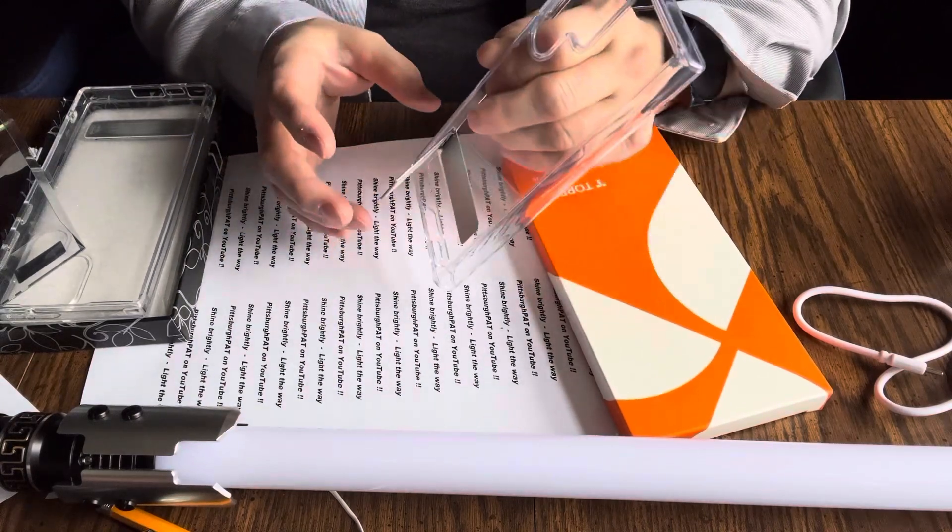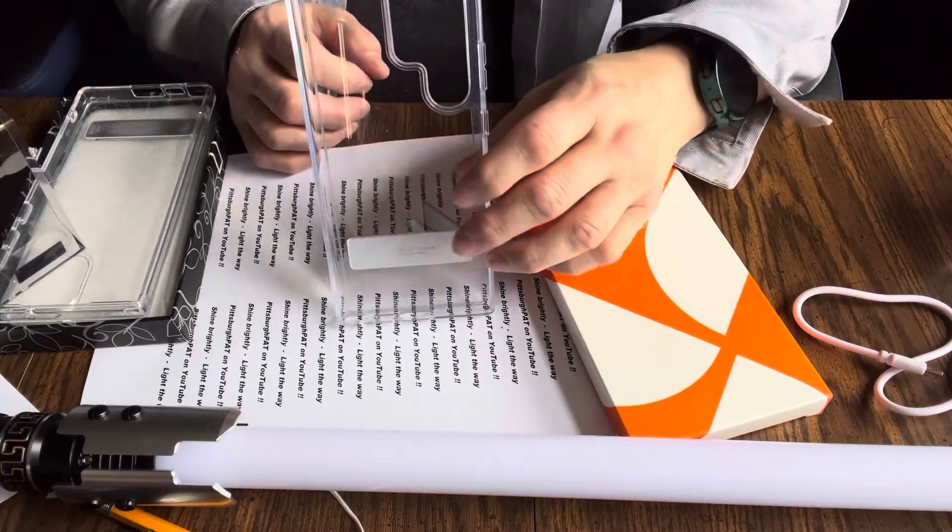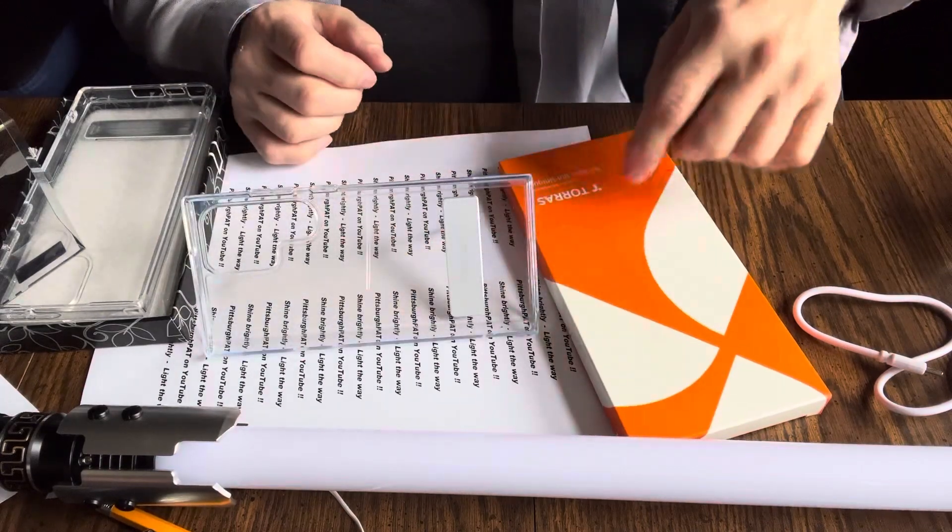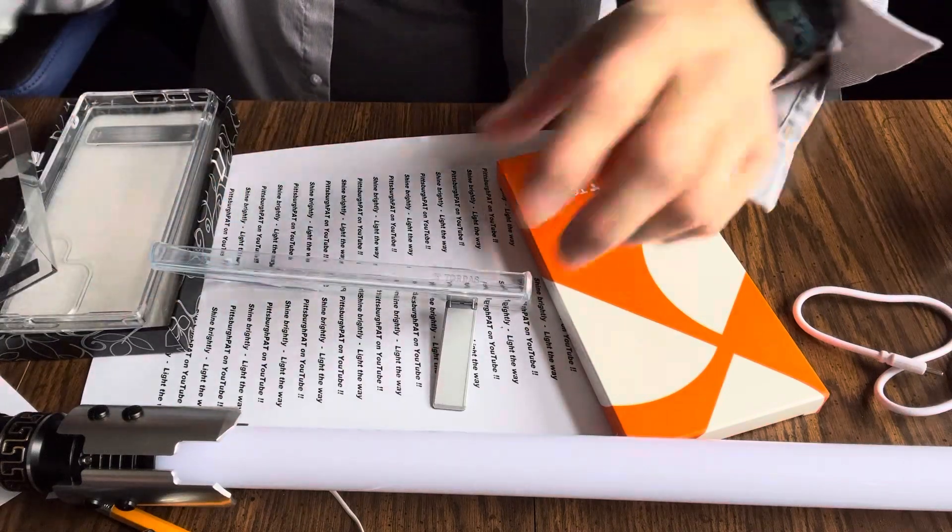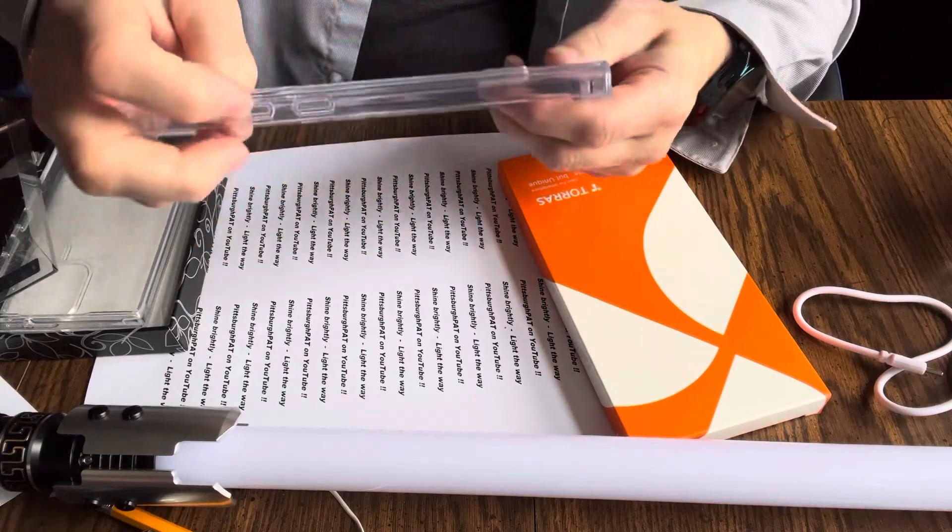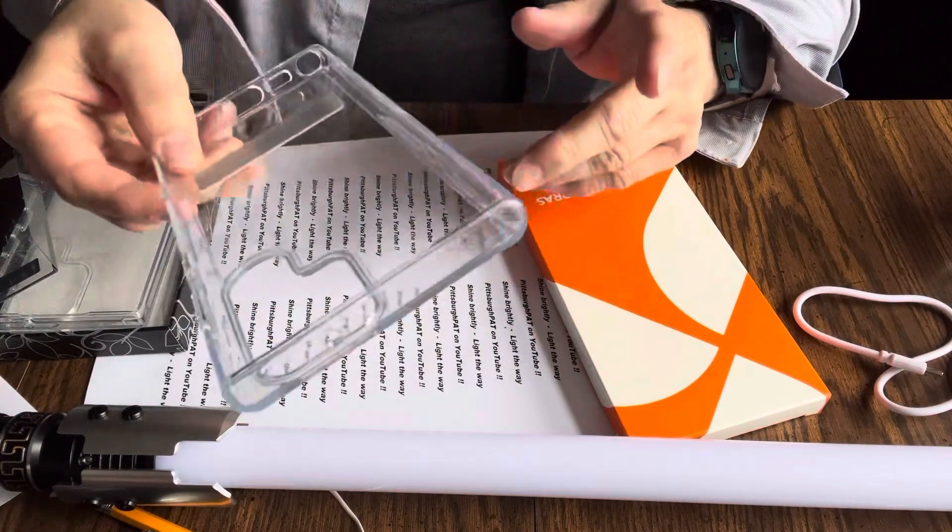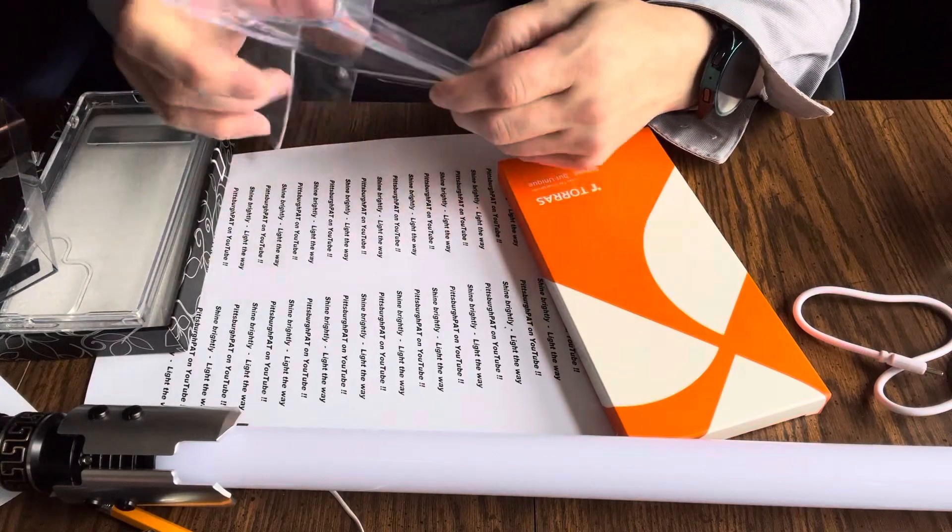But the nice thing about this is it came with a kickstand. And the cool thing about this kickstand is it works like that, works like this. This is the Taurus. It also works like that. So that's kind of slick. The buttons are clear. The cutouts are good. I've recorded with it. The cutout doesn't block the microphone. That's important.